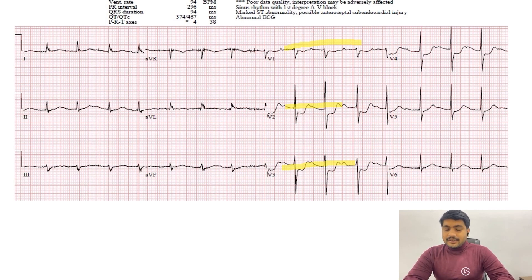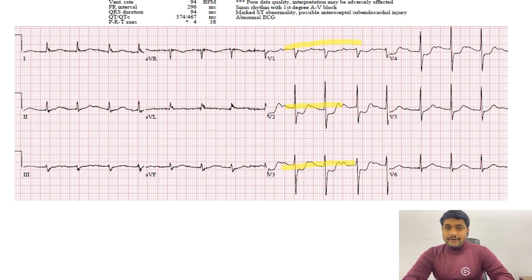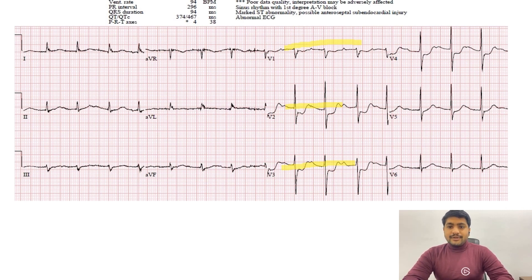80 percent of the time our RCA gives rise to the posterior descending artery, and that is the artery that supplies the posterior wall — we call that a right dominant heart. In 15 to 20 percent of patients, the posterior descending artery can be given by the left circumflex artery or left anterior descending artery.